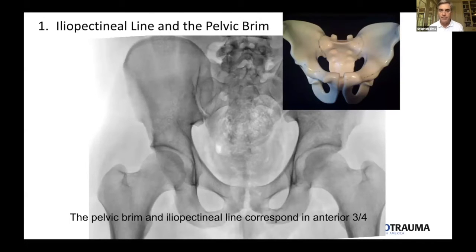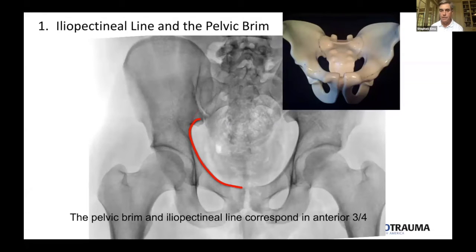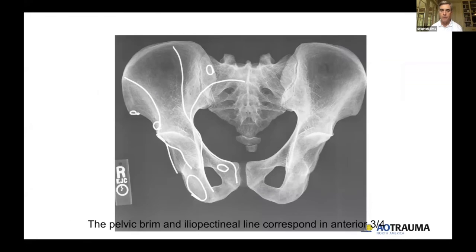The iliopectineal line is the pelvic brim for the anterior three-fourths of the pelvic brim. In the posterior portion, it's an area slightly lower than that. The dotted line represents the pelvic brim, but the solid line represents the iliopectineal line, which is really an area almost in the roof of the sciatic notch where the x-ray beam is tangential to it in the back portion. So it doesn't necessarily follow the pelvic brim the entire way down.